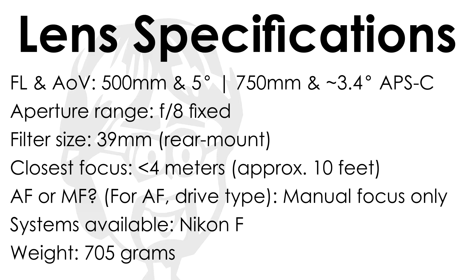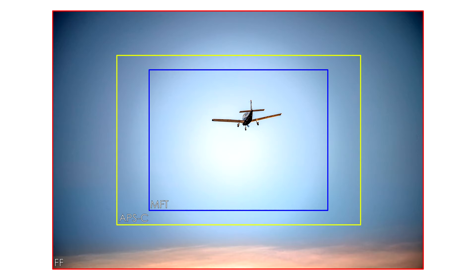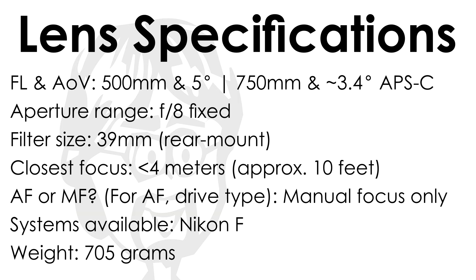The focal length and angle of view are 500mm and 5 degrees on full frame. If you do want to use this on APS-C, for which there are many good reasons, that bumps it to 750mm and around 3.4 degrees for your angle of view.